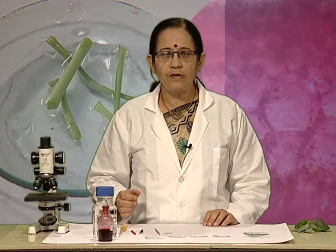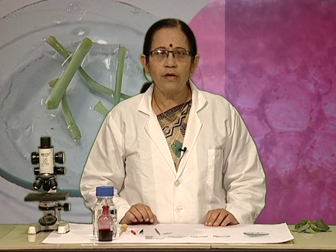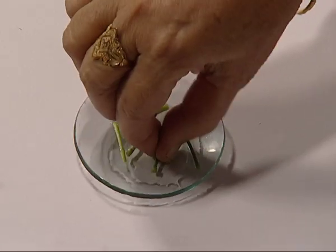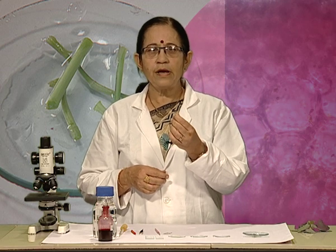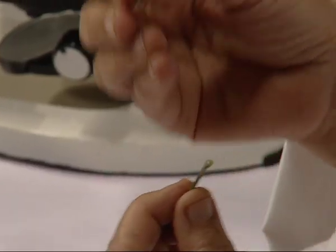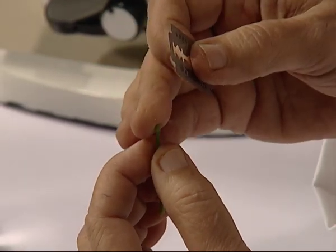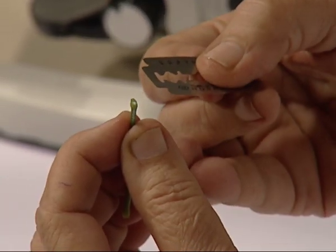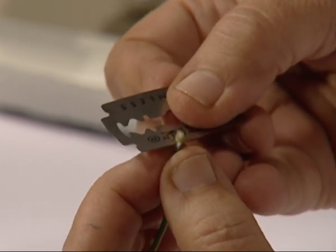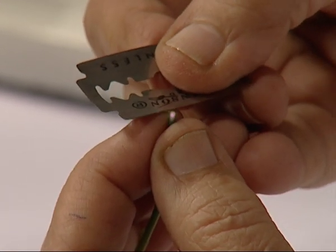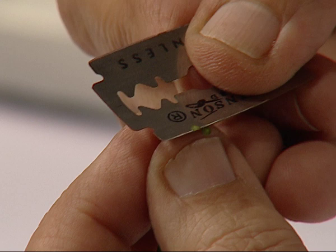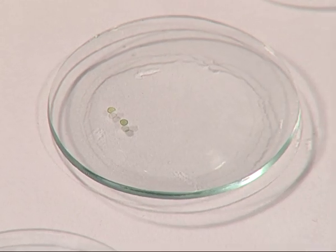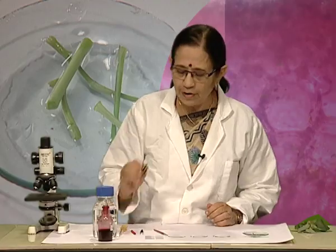Now let us start cutting the section of a stem. For this, you need to hold the stem in your left hand in an upright condition and hold the razor blade at right angles to the axis of the stem. Try to cut very thin sections of the stem — as thin as possible — and then put these in water. Here you can see I have cut sections of the stem and put them in water.